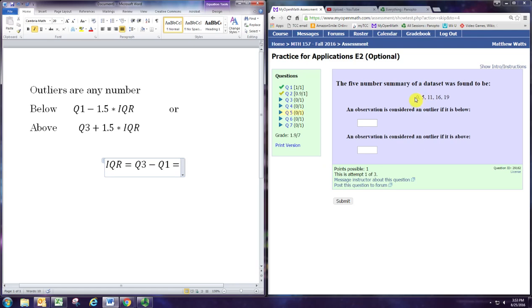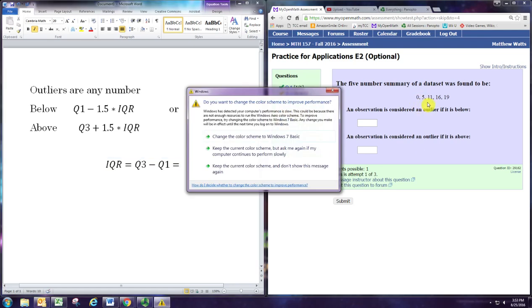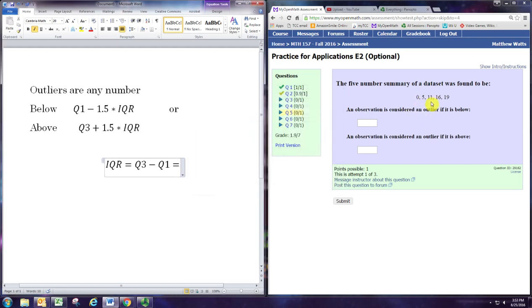The numbers in the five-number summary are the min, first quartile, median, third quartile, and max.